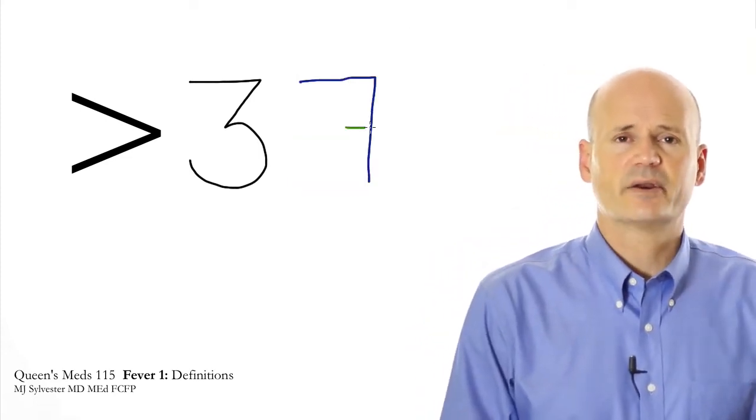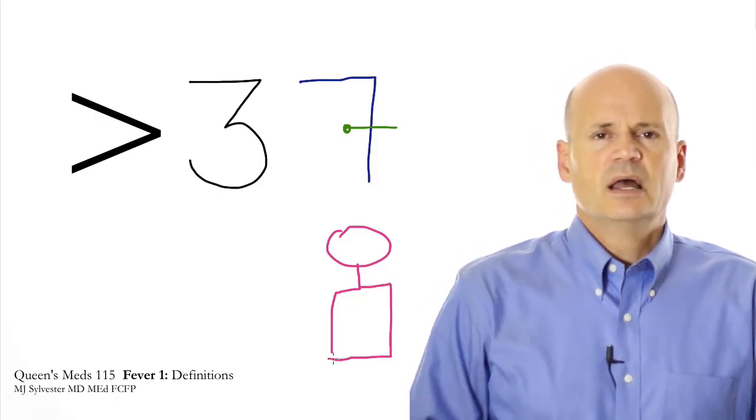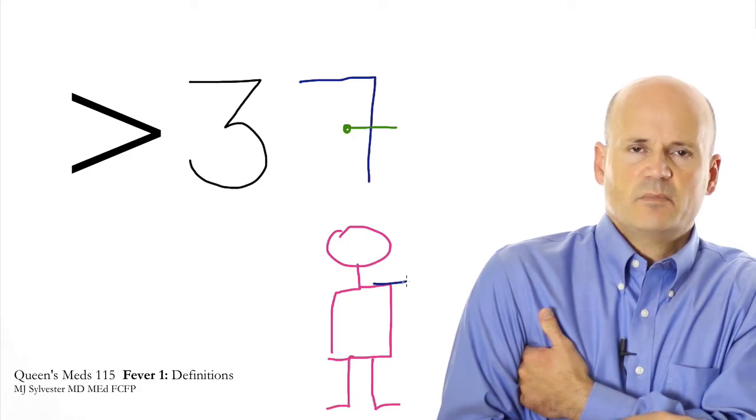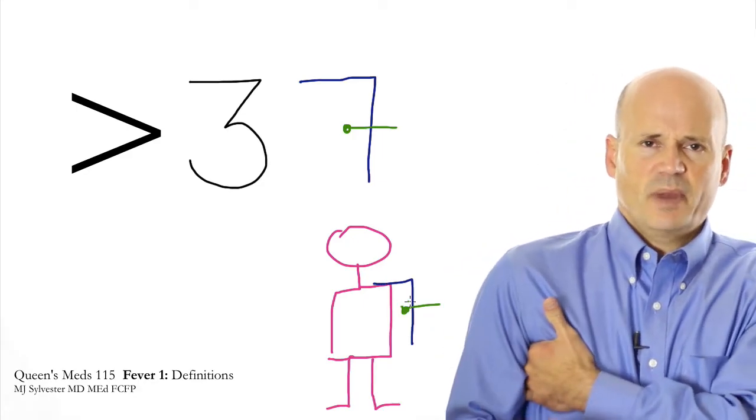If the temperature is axillary under the arm, just imagine that that seven is someone's arm and the cross piece of a seven that some people draw when they draw sevens is the thermometer that's going under your patient's arm.